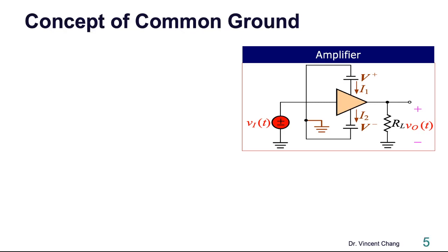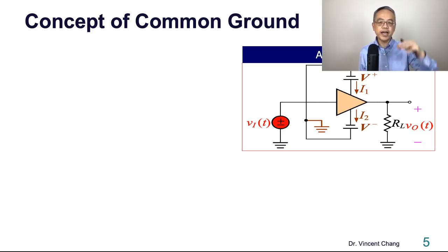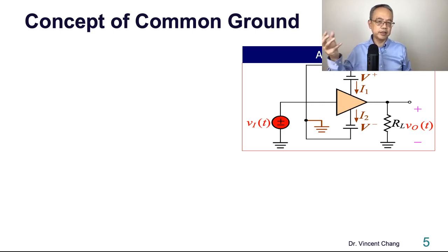This brings up a very important concept: the concept of common ground. Where is the ground? Where is the reference zero voltage terminal? It's the common terminal connecting the cathode of the positive supply and the anode of the negative supply. The common ground is the common terminal connecting the positive supply and the negative supply.